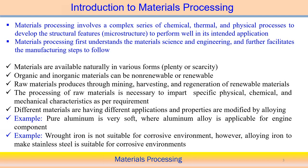Basically, material processing first requires understanding material science and engineering — understanding about the materials themselves. Then we try to think about how these materials can be processed, or what kind of manufacturing technologies we should follow to get the desired product which we can utilize in our everyday life. That is the basic understanding of materials processing. Both are important — the materials as well as the manufacturing processes.